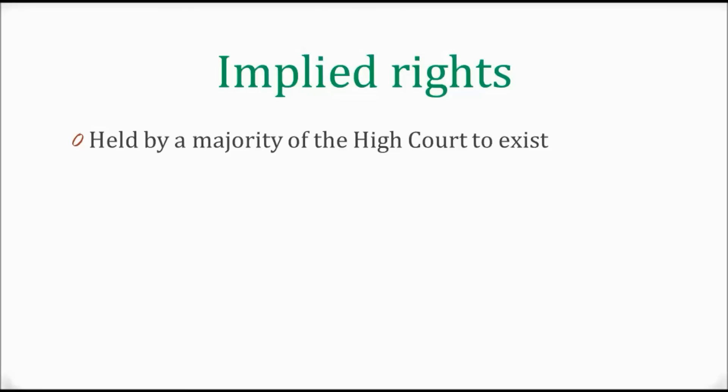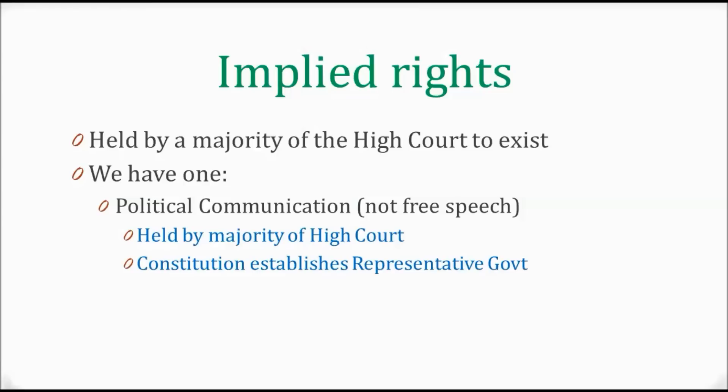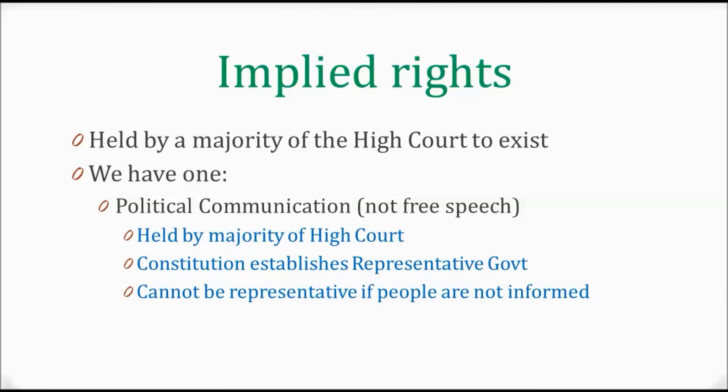Implied rights are rights that aren't in the actual Constitution but are interpreted by the majority of the High Court to exist. The High Court, in one of its roles, interprets the Constitution and gives meaning to the words, and by doing so they have found one implied right: the right to freedom of political communication. That's a more limited right than free speech. The High Court said that because the Constitution establishes representative government, the government can't be representative if the people are not informed, so there should be a right to free political communication to ensure that the government remains representative.